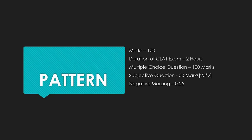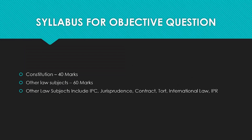Now talking about the syllabus — first, the syllabus for the objective question. The syllabus for the objective question includes the constitution and other law subjects. You might be asking where jurisprudence is — jurisprudence is not missing, it is now kept under the other law subjects. We will be making another video on why you should not look down upon jurisprudence, because it is certainly a subject you need to study. Constitution will carry 40 marks and other law subjects will carry 60 marks.